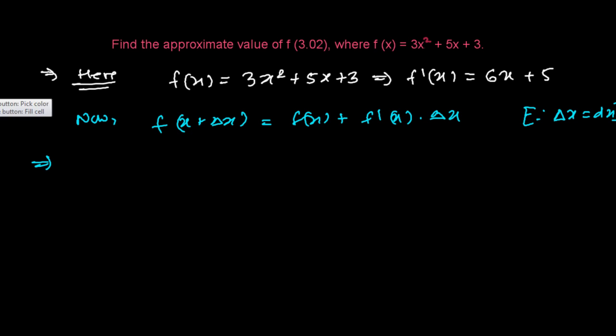After that we need to suppose x, and to suppose x is very easy. Just look at the question. This is your x and this is your increment. Let x = 3. Therefore, Δx is going to be this number minus this x, so that's 3.02 - 3 = 0.02.